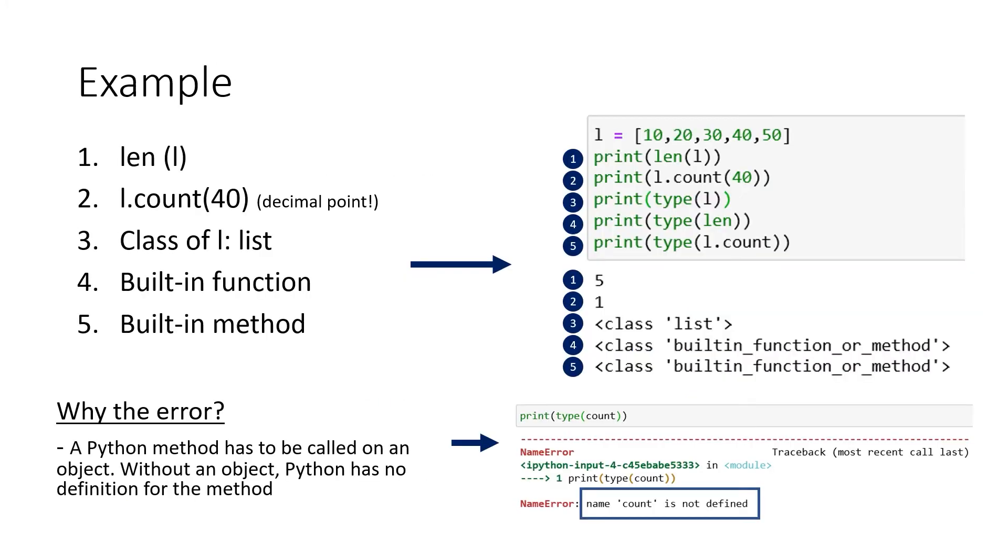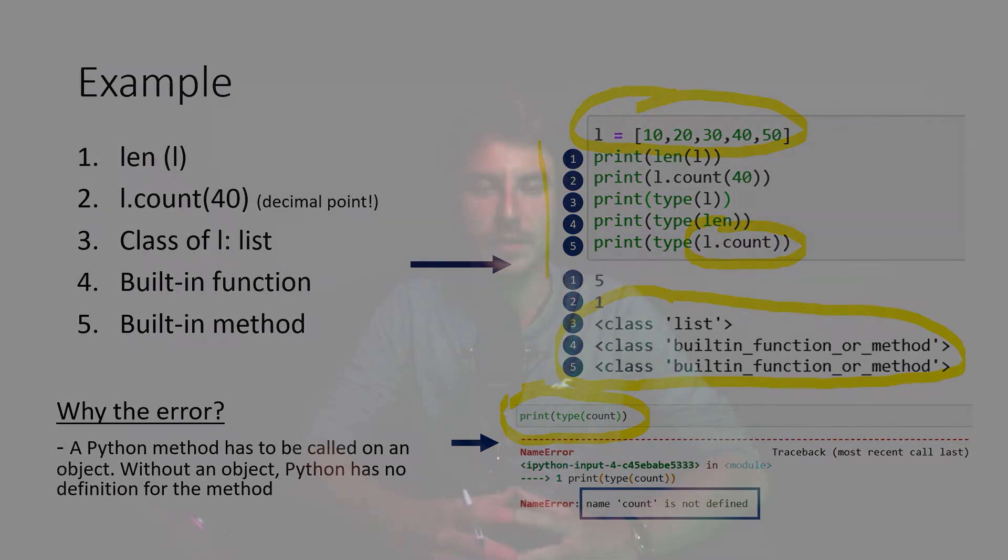Let's have another little example to visualize the whole process. We can see here on the right side, we have a list with five different elements, and then we applied a bunch of different functions. For example, the length function and also the count function. Now if we search for the type, we can see that L is obviously a list, and the other one is built-in function or method. Now here the focus is that we wrote L.count. So we actually linked our method to an object, and if we don't do it like we do it here right now, then we can see that Python does not understand what count means. So Python really understands methods if they are linked to an object, if they stand alone, Python will not understand this language.